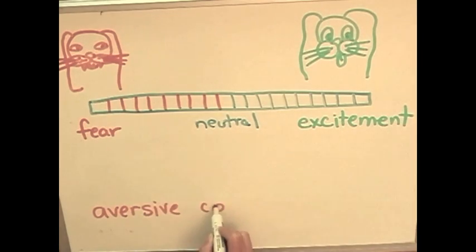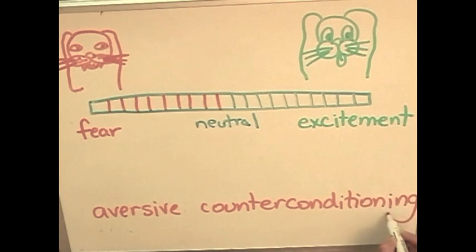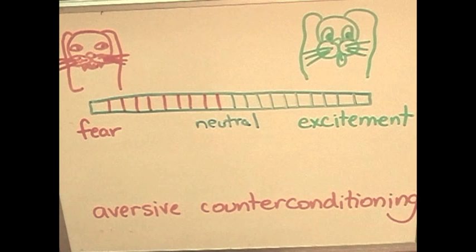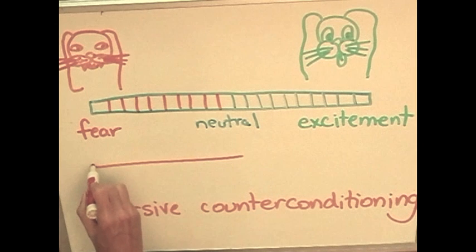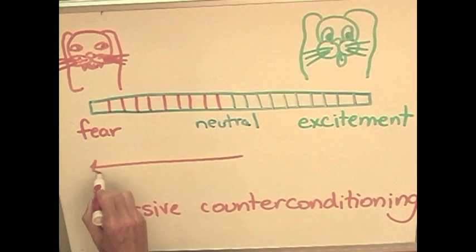The opposite of counter-conditioning, called aversive counter-conditioning, can also occur. An example would be if a dog is given a correction in the presence of another dog then becomes fearful of other dogs.